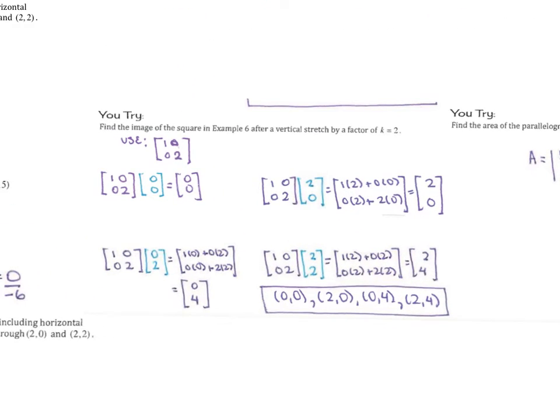So you're using [1, 0; 0, 2]. And if you multiply it through, you would find that the vertices would be at (0, 0), (2, 0), (0, 4), and (2, 4). And then of course, you could plot those points and graph it as needed.